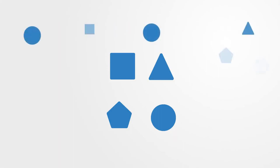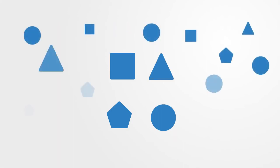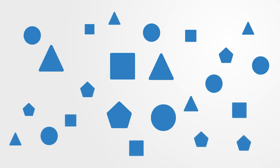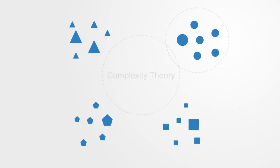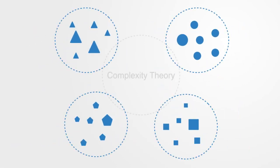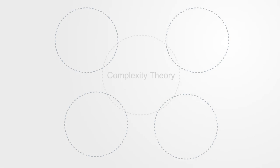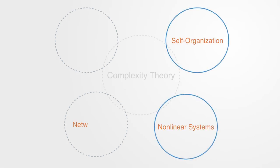Complexity theory encompasses a very broad and very diverse set of models and methods. As yet, there is no proper formulation to structure and give definition to this framework. Thus, we will present it as a composite of four main areas that encompass the different major perspectives on complex systems and how to best interpret them, including self-organization theory, non-linear systems, network theory, and adaptive systems theory.